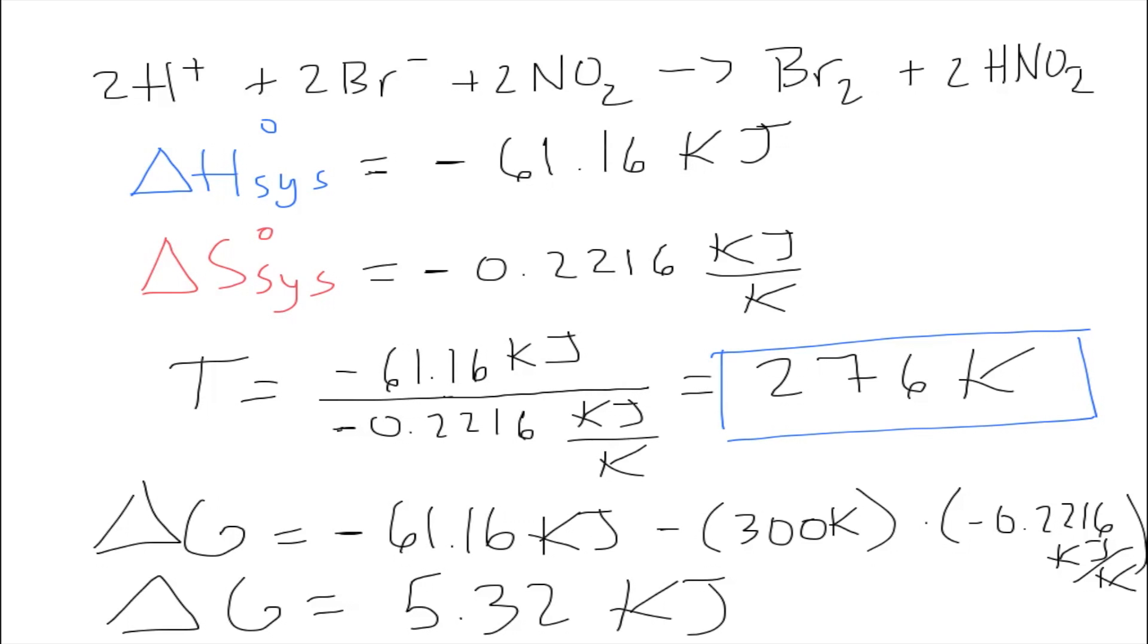That makes this non-spontaneous. So everything above 276 is non-spontaneous, meaning everything lower than 276 is spontaneous. So the range for spontaneous is anything less than 276. This is our answer. Spontaneous when less than 276 kelvin.